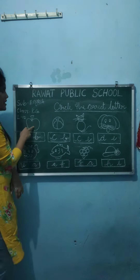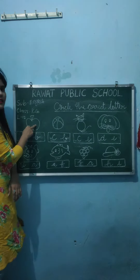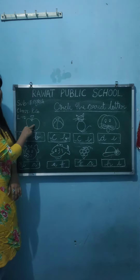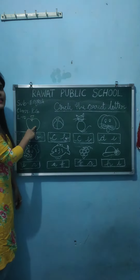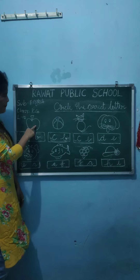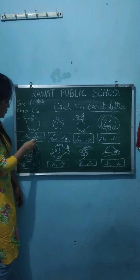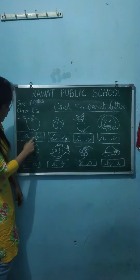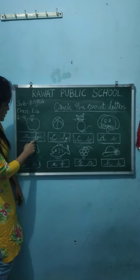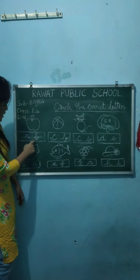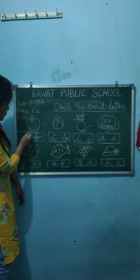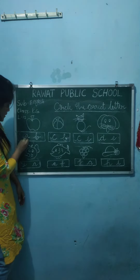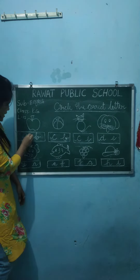What is this? This is apple. What is this? This is apple. So now which letter is this? A. So circle the letter A.